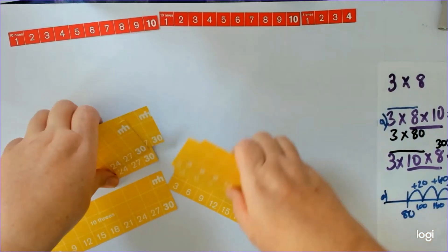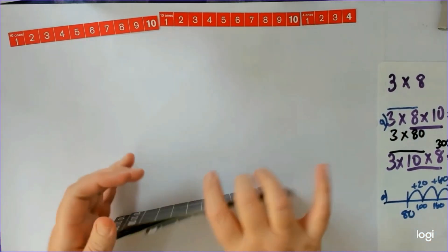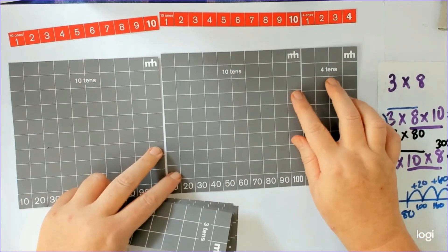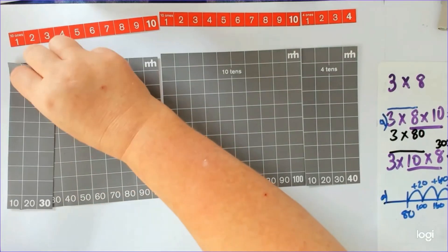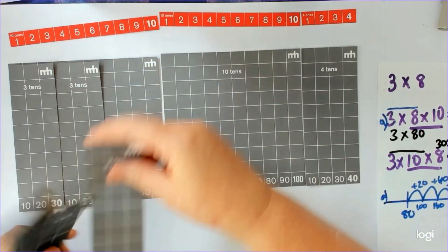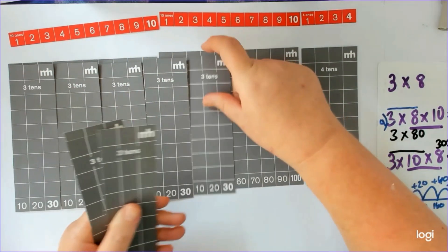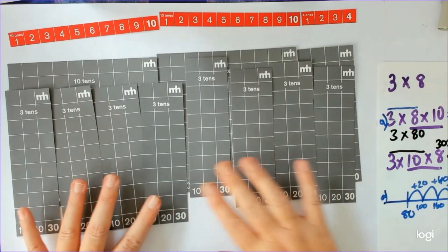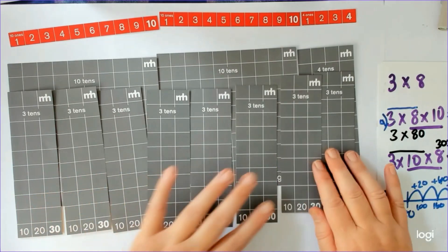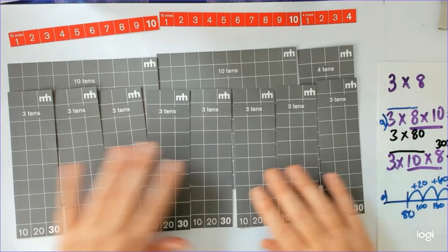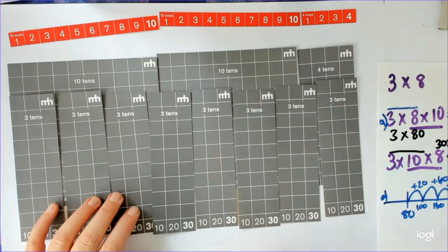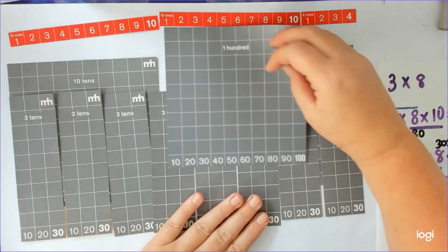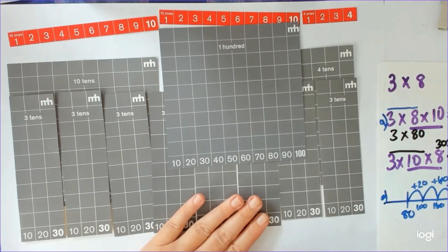So it doesn't matter whether you think of 3 times 80, 30 times 8, 8 times 30, or 80 times 3 — it's all equal to 240. I could put these and match them: 1, 2, 3, 4, 5, 6, 7, 8 — and you can see that 8 groups of 3 tens is 240. 10 tens is 100, so it's 240.